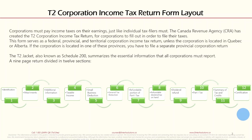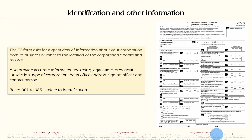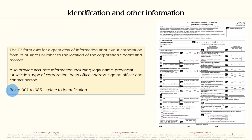Let's look at the detail on each section. The first is Identification and Other Information. The T2 form asks for a great deal of information about your corporation — from its business number to the location of the corporation's books and records. You must provide accurate information including legal name, provincial jurisdiction, type of corporation, head office address, signing officer, and contact person. Boxes 001 to 085 relate to identification.